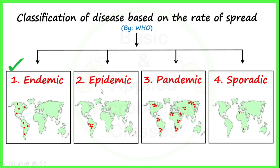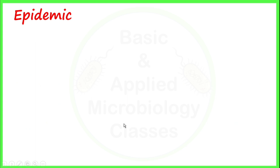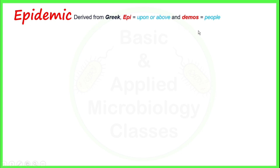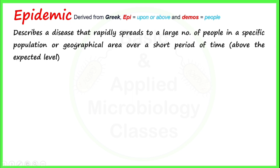Now let's talk about the second type, epidemic. Just like endemic, the word epidemic has also been derived from Greek, where 'epi' means 'upon' or 'above', and 'demic' has been taken from 'demos' which means 'people'. So the meaning of epidemic is 'upon people' or 'above people'. This term epidemic is used to describe a disease that rapidly spreads to a large number of people in a specific population or geographical area in a very short period of time. Usually the cases are reported above the expected level.